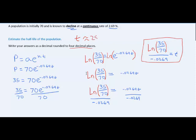t is approximately 25.7676, and the units on time in my formula was in years. What this means is my initial population of 70 will cut in half every 25.7676 years.